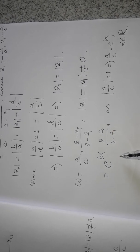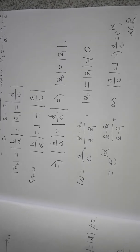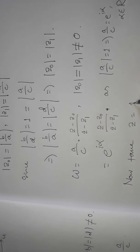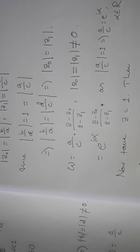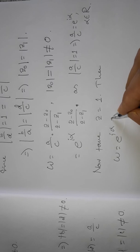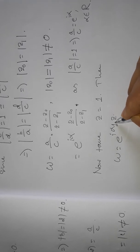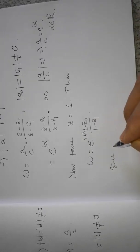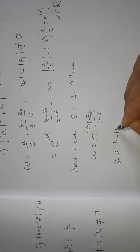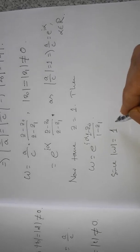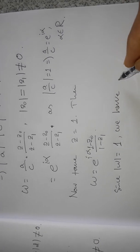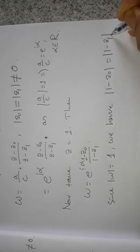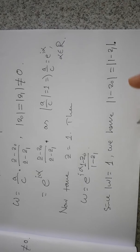Now we take z = 1. Then w = e^(iα) · (1 − z₀)/(1 − z₁). Since z = 1 is on the real axis, w must also lie on the unit circle, so |w| = 1. This gives us |1 − z₀| = |1 − z₁|. In the next video I will proceed further.